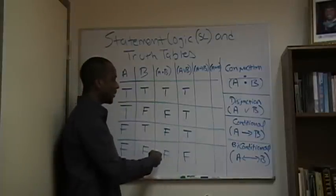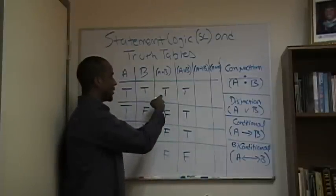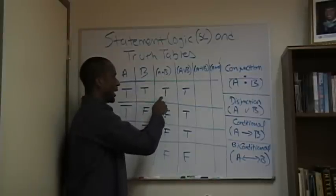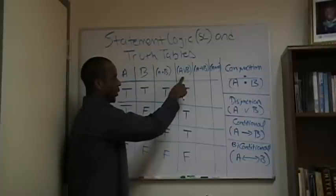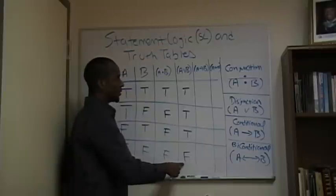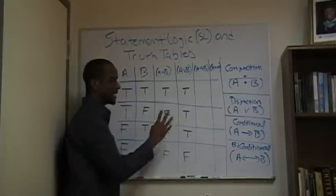With respect to the conjunct, only in instances where both variables are true will it be true, as opposed to the disjunct, where only in instances where both are false will it be false. So these are sort of antithetical.